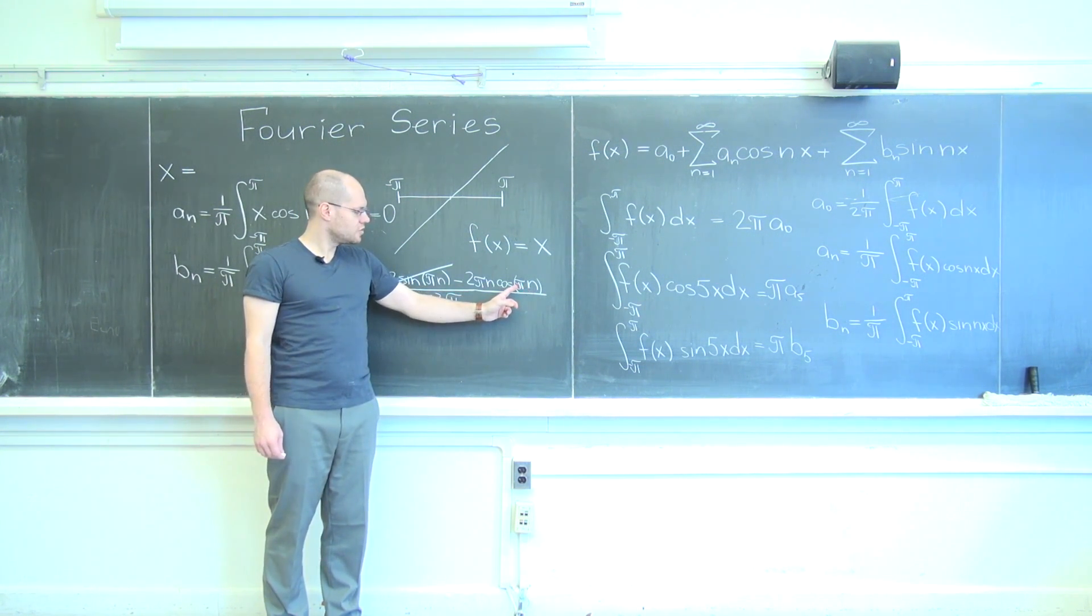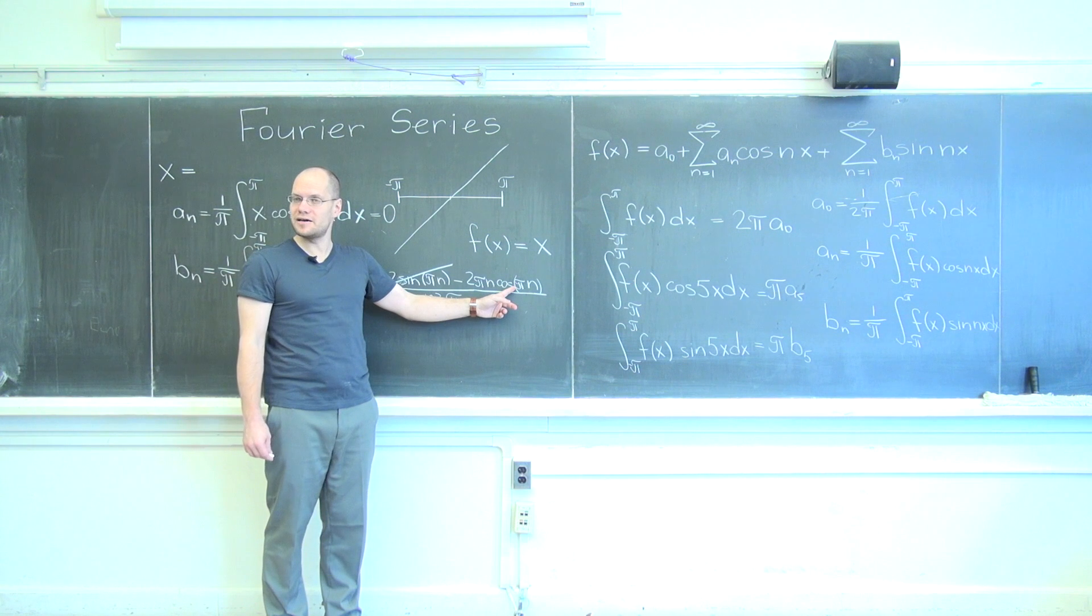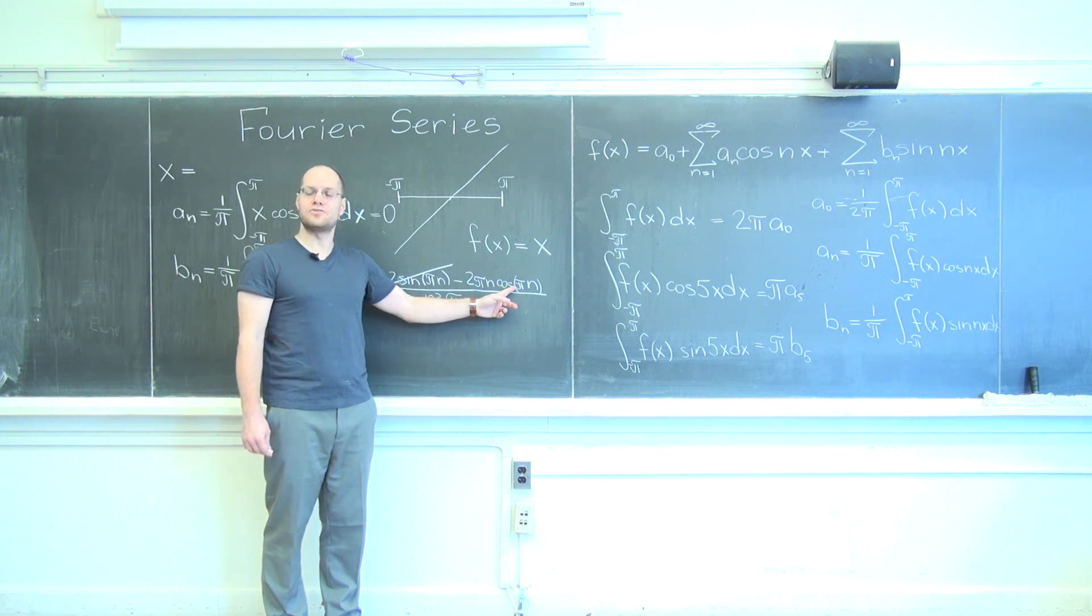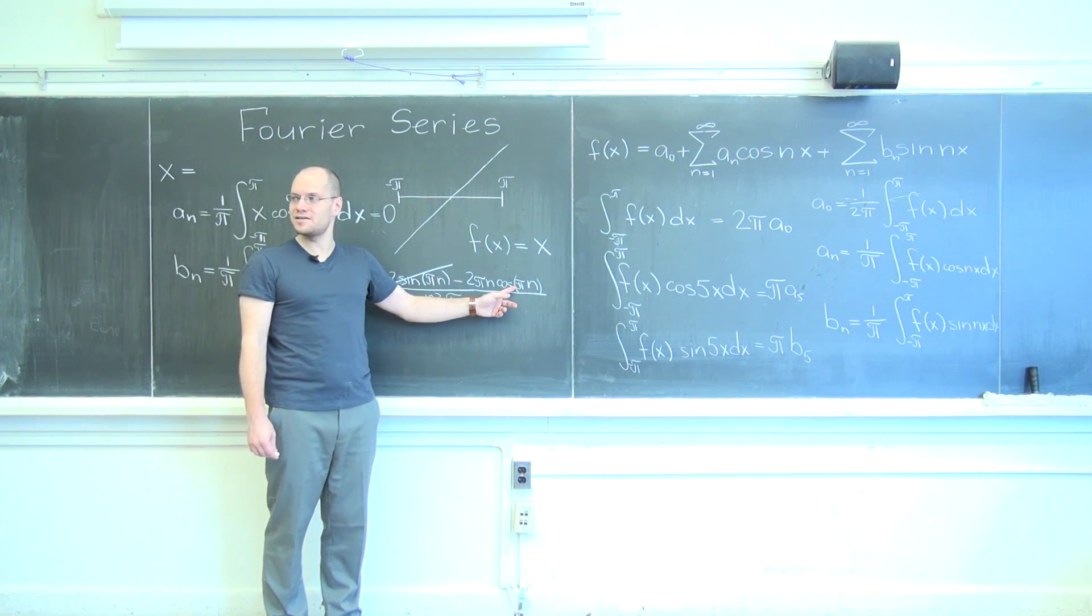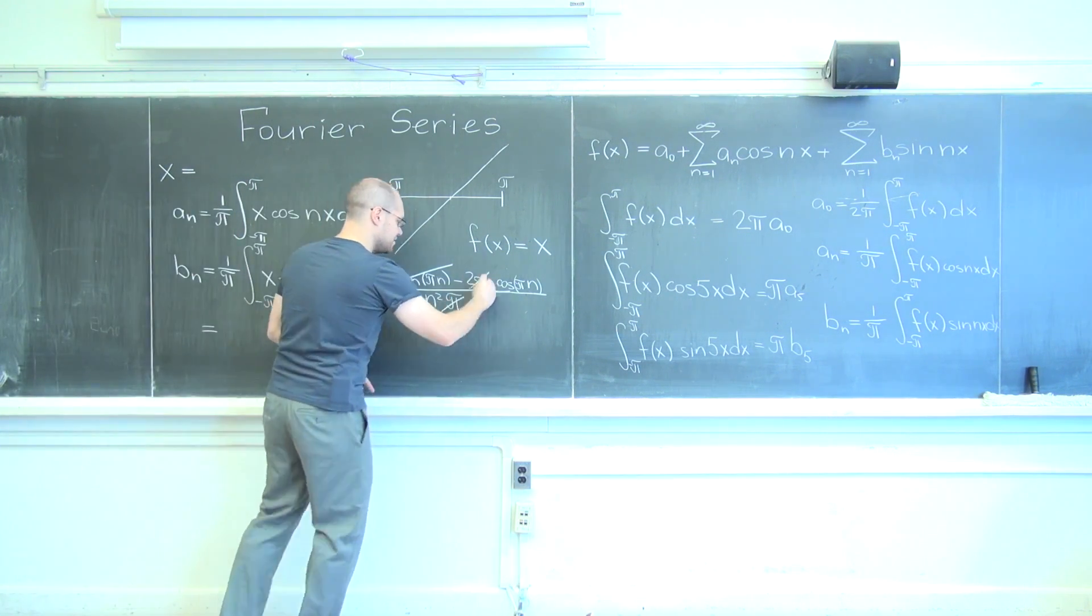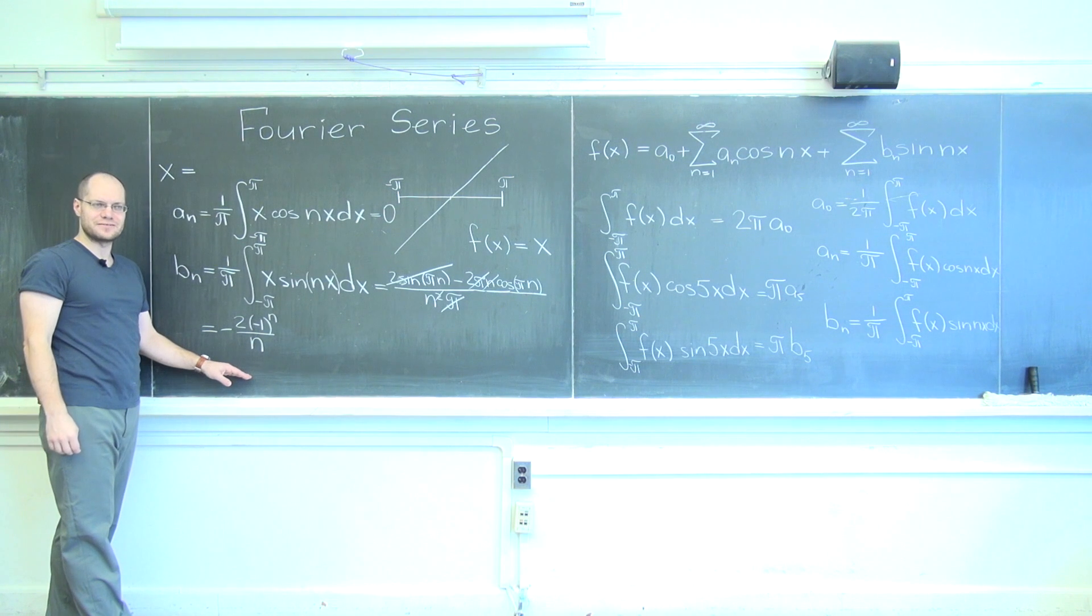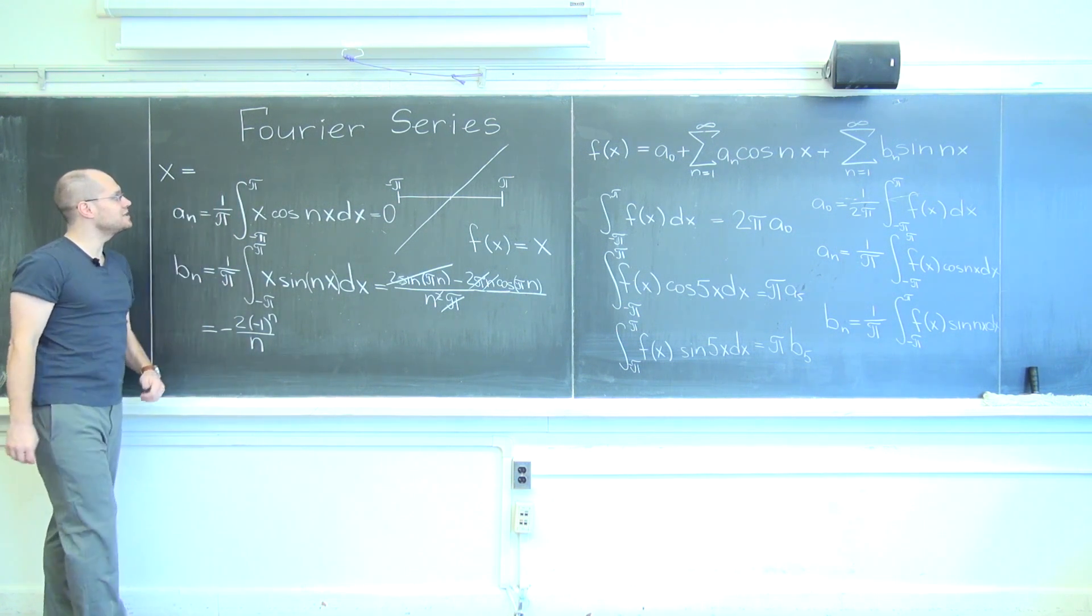Because what is cosine of pi? Minus one. And cosine of two pi? And three pi? And four pi? Sounds to me like minus one to the n. Yes. So the answer is, that's the coefficient. Let me write down what the answer is then.